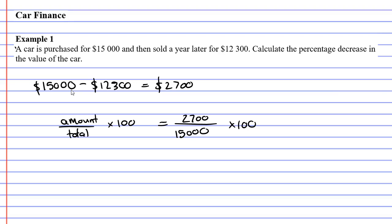So we're just going to type in our calculator. $2,700 divide $15,000. And then we're going to times it by 100. And that gives me 18. So it was an 18% drop in price.